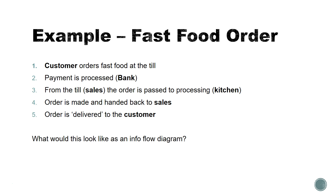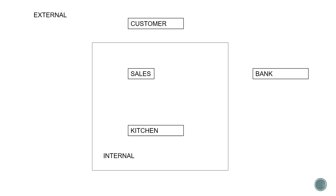Looking at this as an information flow diagram, you can see there are two external entities: the customer and the bank. Within the company itself there are two main items: sales and kitchen. Within the fast food company there are likely many more than this, but inside this chain of events these are really the only people that matter. You may get management involved if there's an issue, but we're assuming this is going to work.